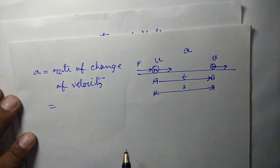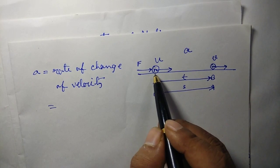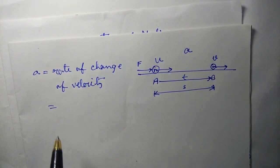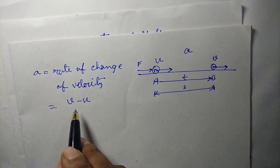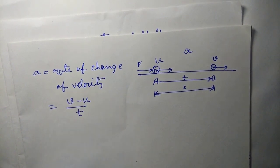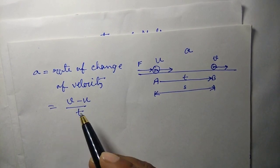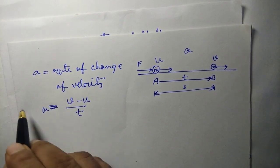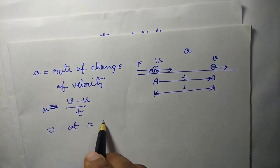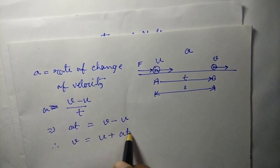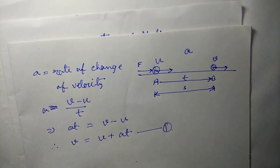In this situation, the change in velocity is v minus u — final velocity minus initial velocity. And while talking about rate, we must consider per time. So acceleration a equals (v minus u) divided by t. If we cross multiply, it becomes at equals to v minus u. Bringing u to the left hand side, it becomes v equals to u plus at. And we have already got the first equation.